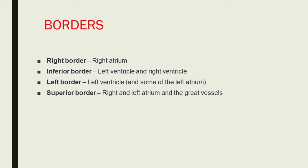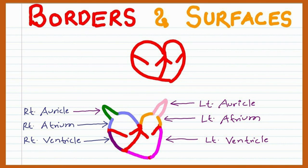Separating the surfaces, the heart has four main borders: the right border — the right atrium; the inferior border — the left ventricle and right ventricle; the left border — the left ventricle and some of the left atrium; and the superior border — the right and left atria and the great vessels.